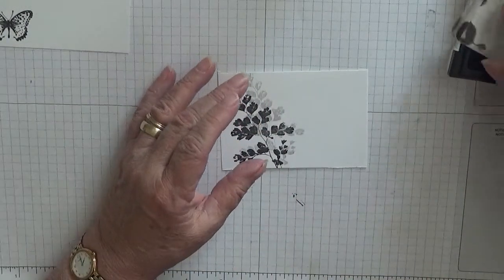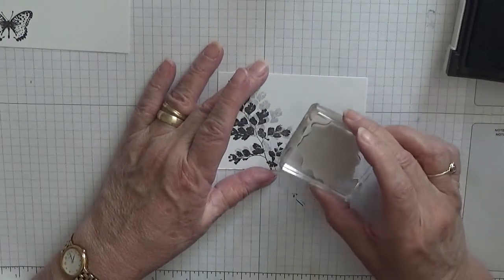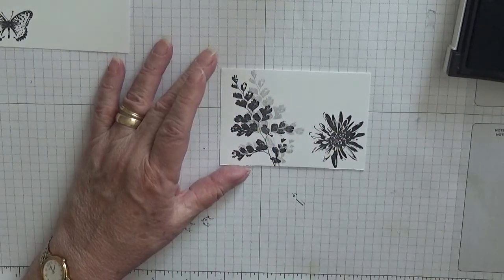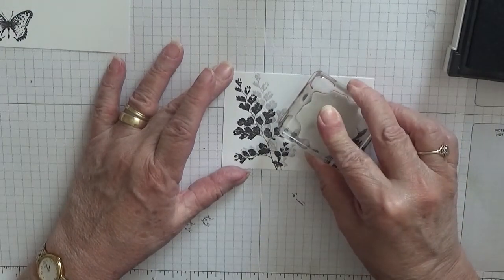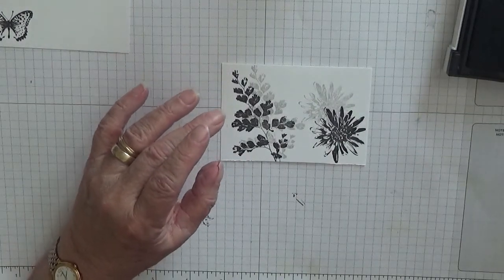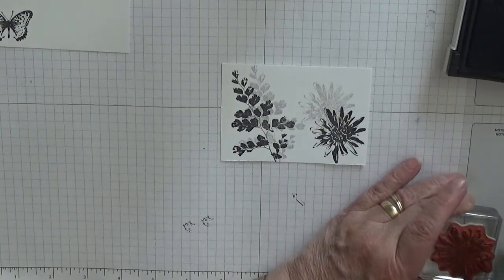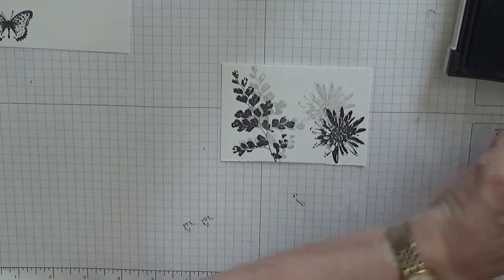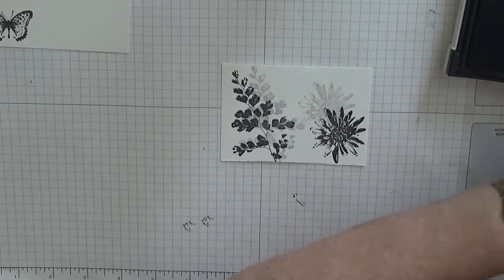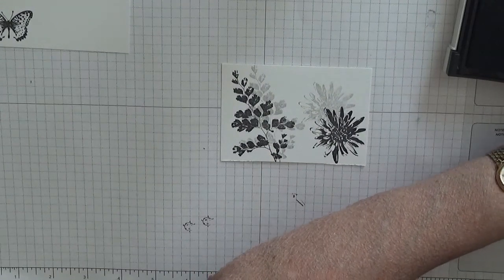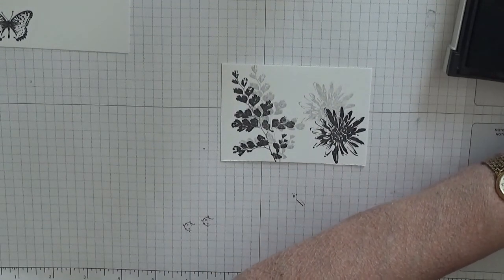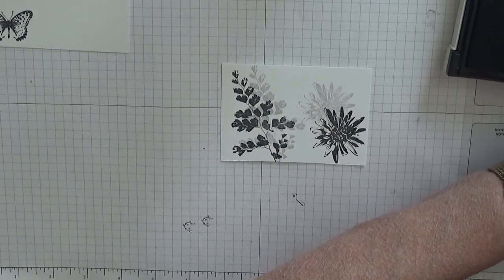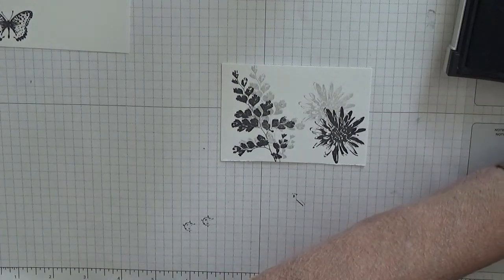The flower. Going to do the same. Ink it up and we're going to stamp it here to the right of the piece of card. Stamp it off twice and then do a shadow like that. And then clean the stamp.